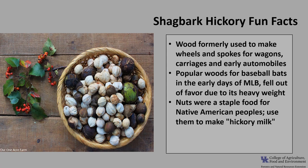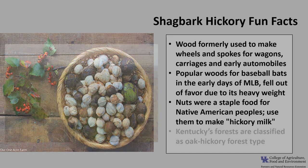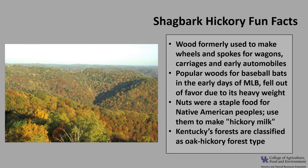Shagbark Hickory nuts were once a staple food for some Native American peoples. They would commonly use them to make hickory milk, a nutritious staple of most of their cooking. Kentucky's forests are classified as oak-hickory forest type because of the abundance of oaks and hickories.